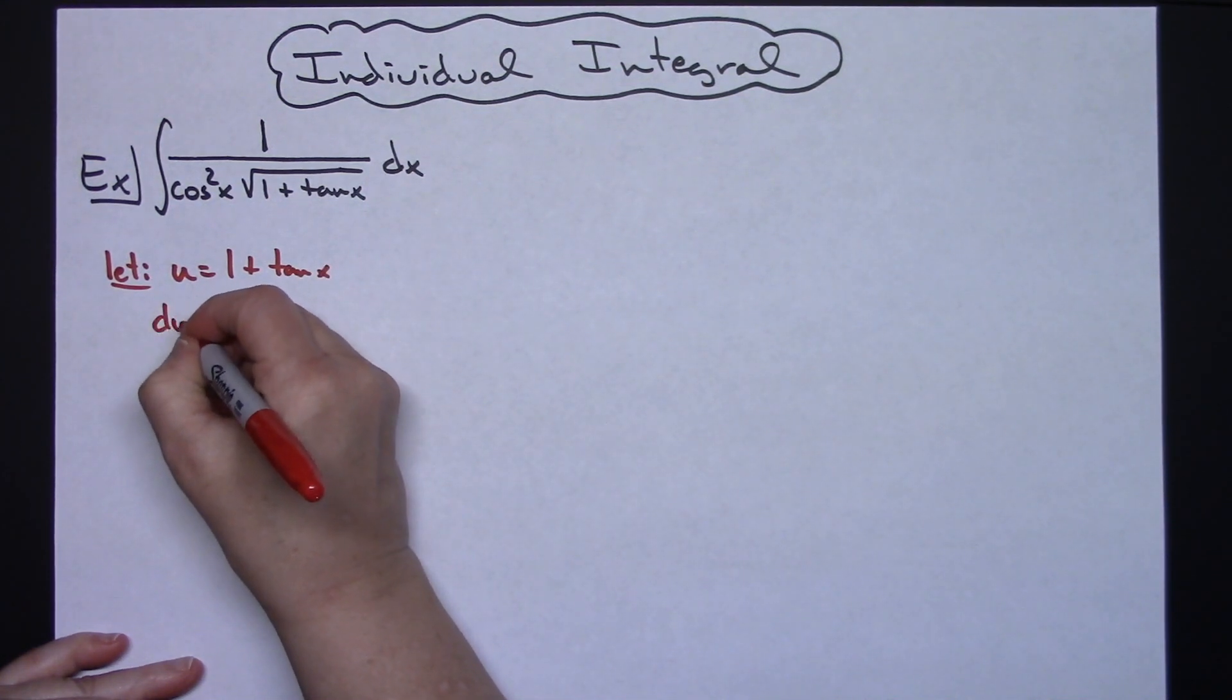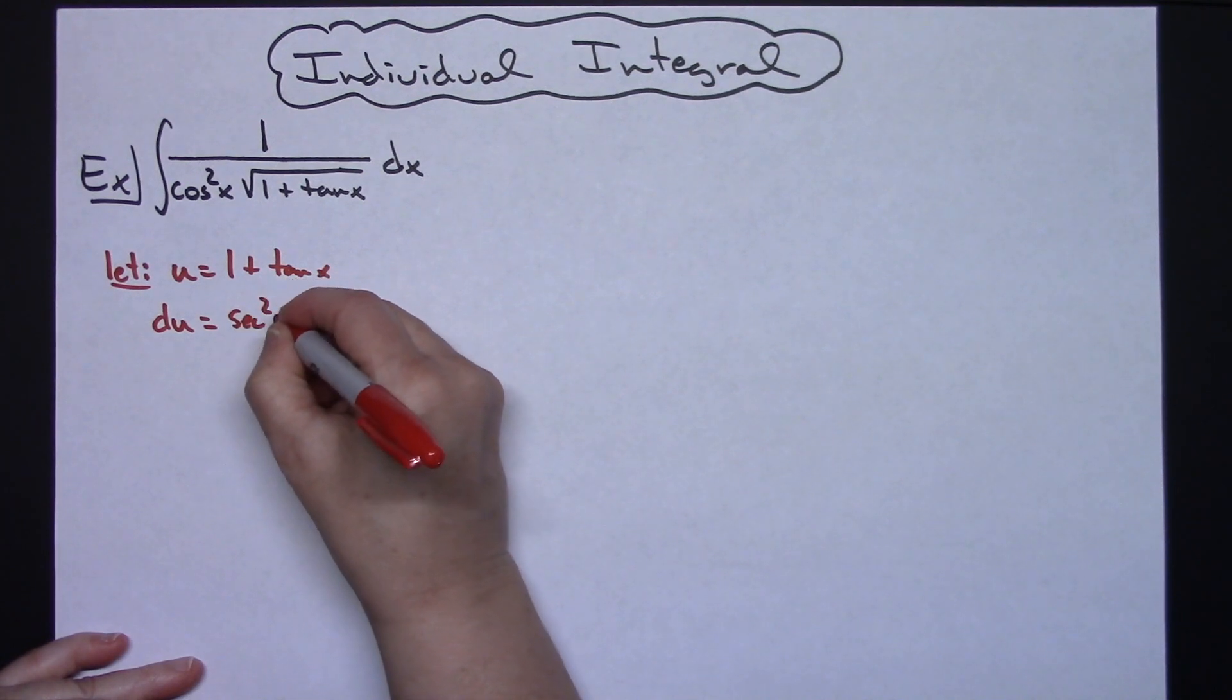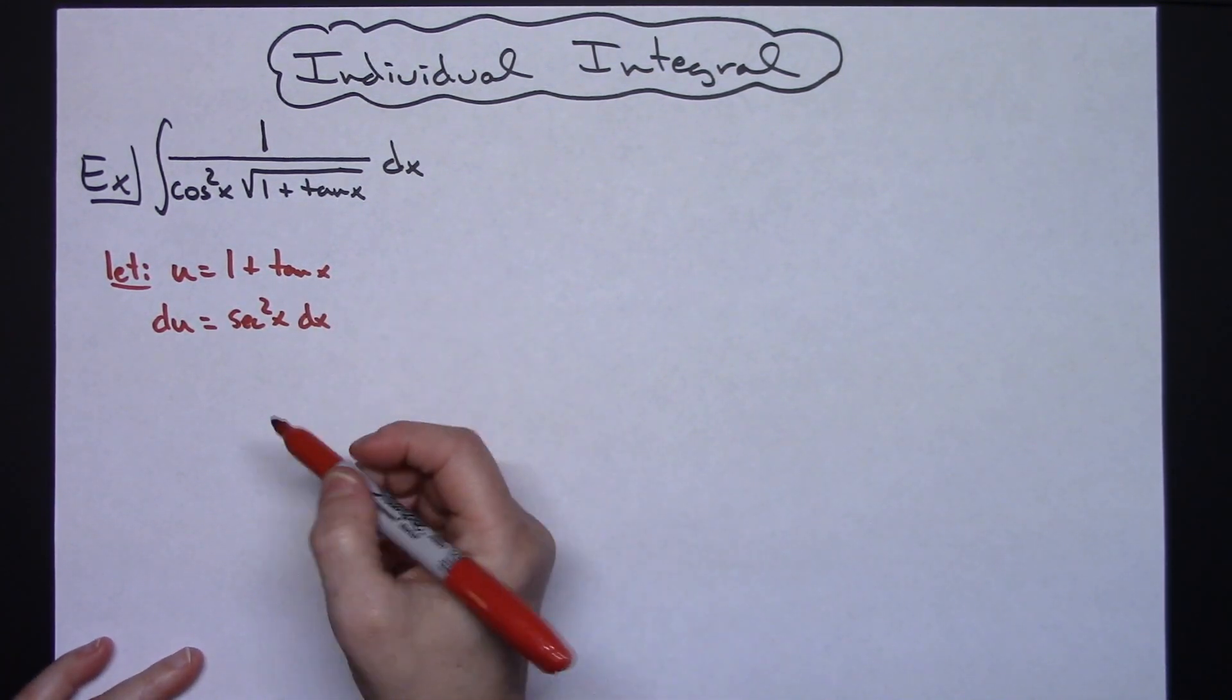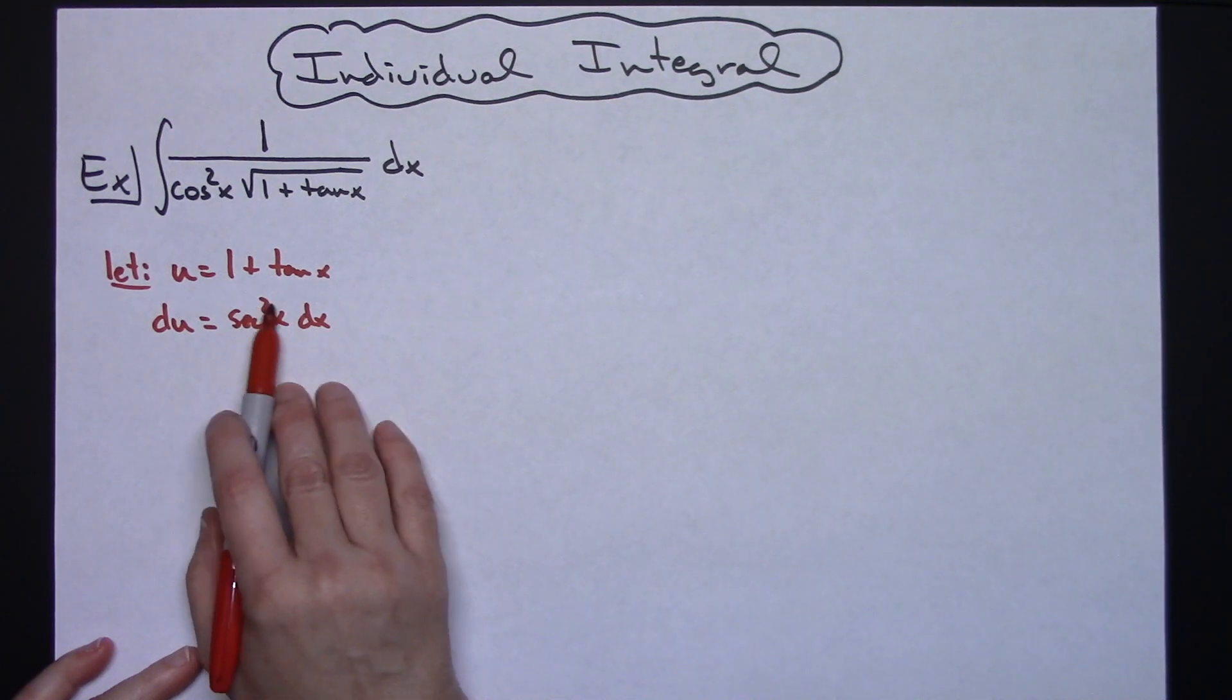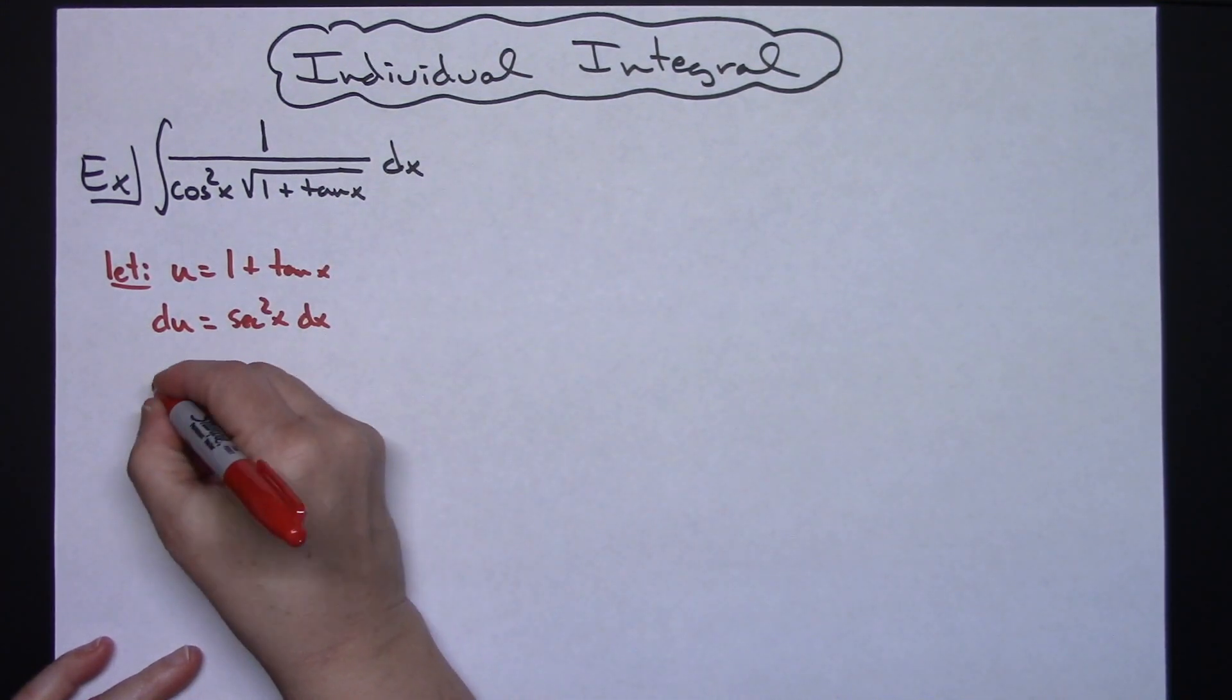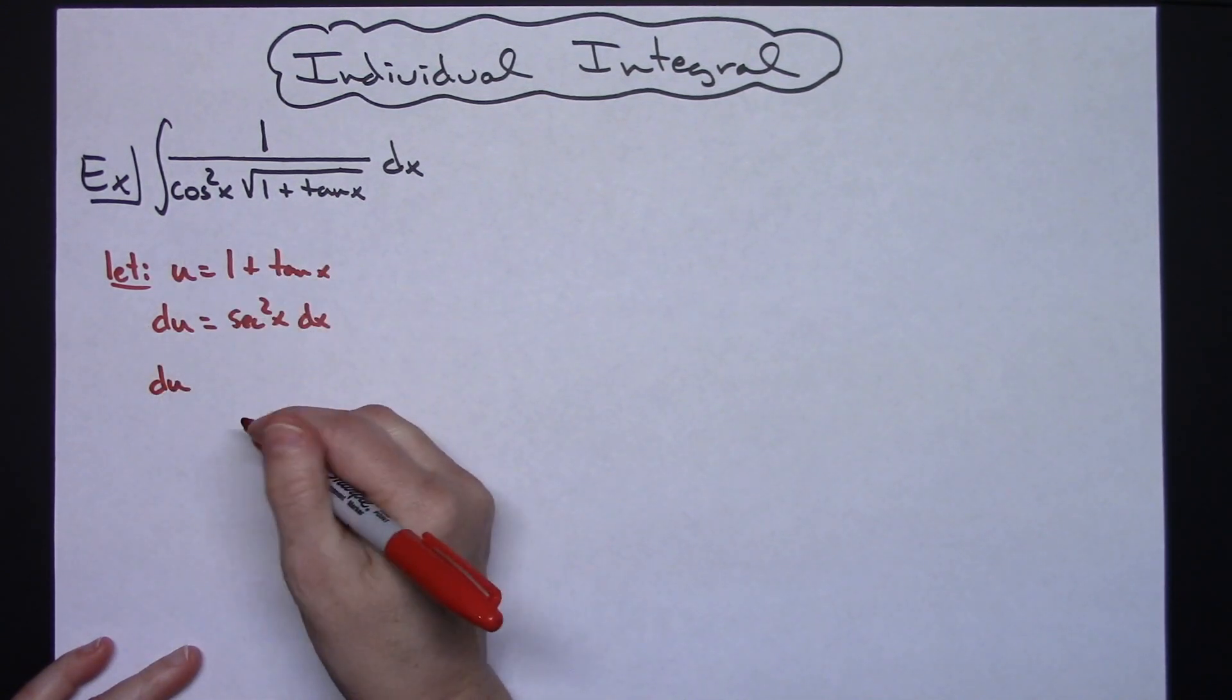Taking the derivative of both sides we'll have du is equal to secant squared x dx. From there normally I solve for dx but what I'm going to do right now is I'm going to change our secant squared x here to 1 over cosine squared x. That's a reciprocal identity that we can use because we're going to want something to cross out with that cosine.